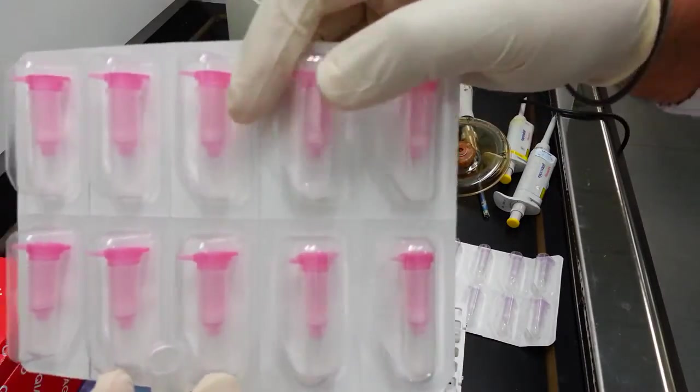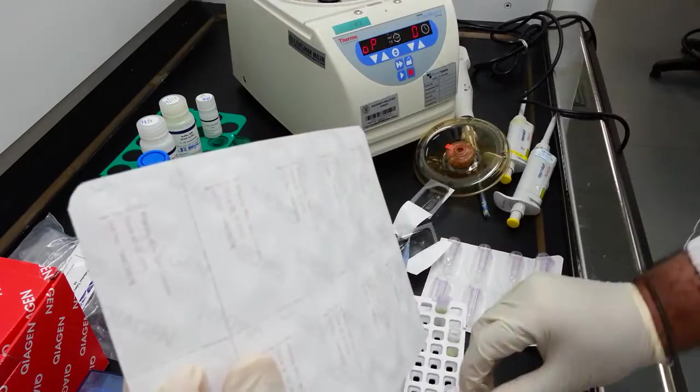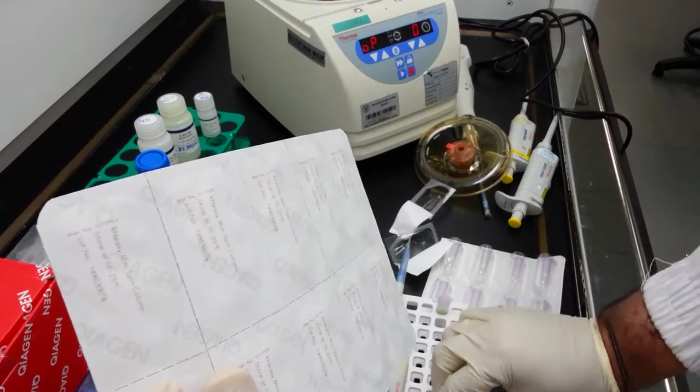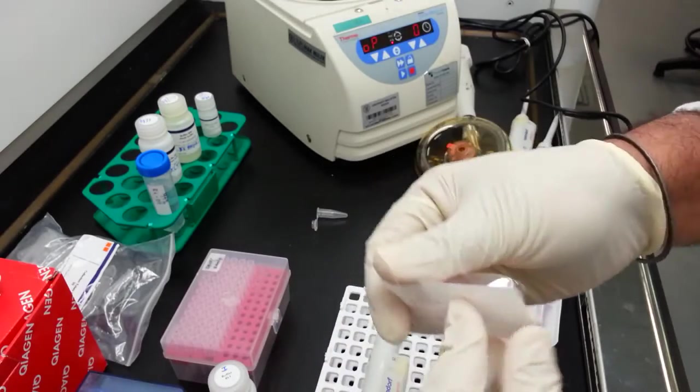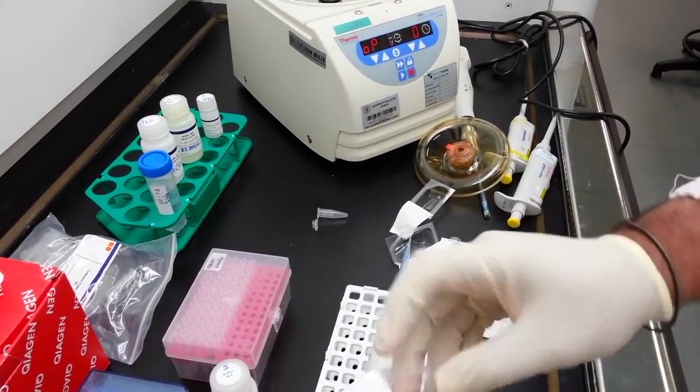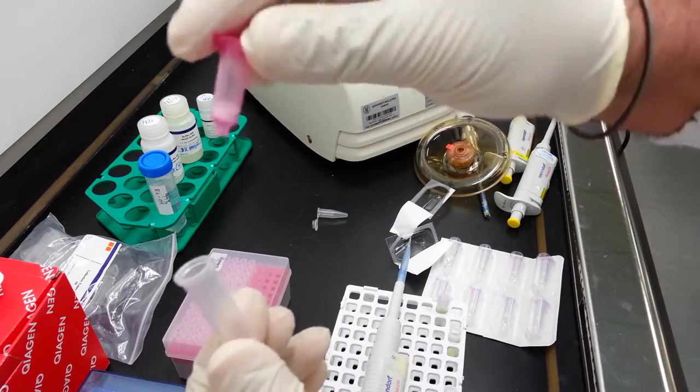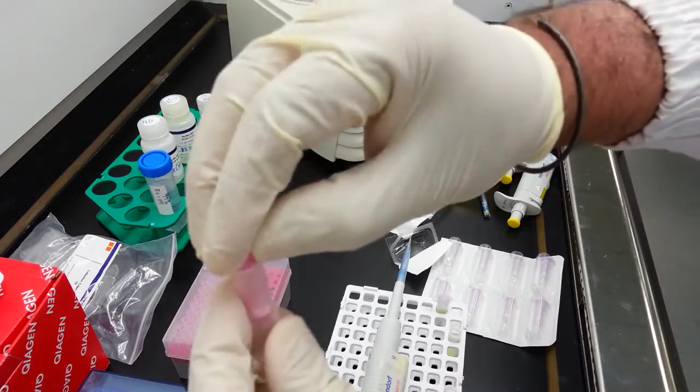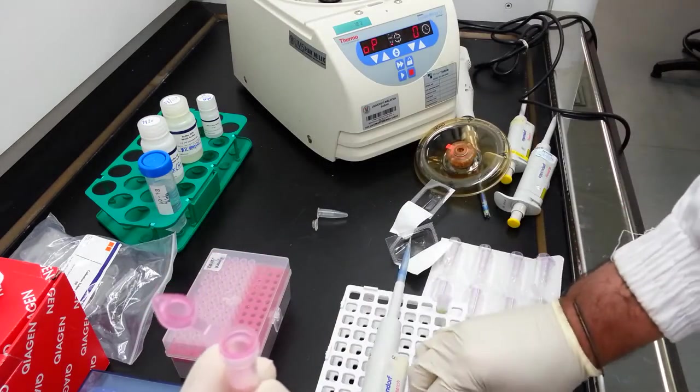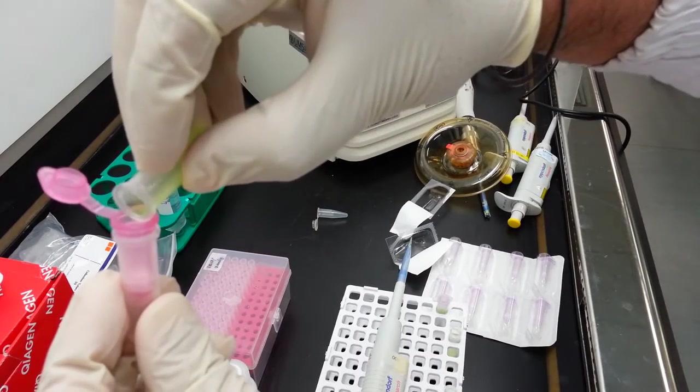Now the RN-EZ kit is equipped with this pink column, which is called a RN-EZ mini spin column. This column consists of two parts: the lower part is the collection tube, the upper part is the membrane containing element. Transfer this mixture into the collection tube.